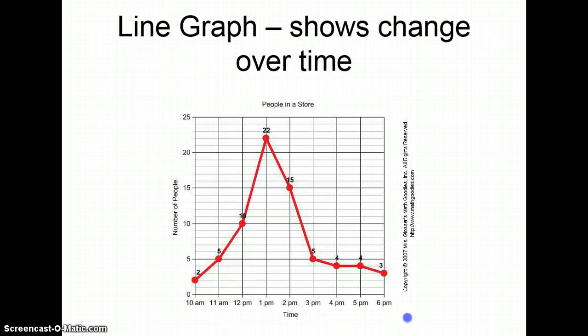A line graph shows change over time. And that time can be in hours, minutes, seconds, years, as long as time is going on, showing a change over time. It doesn't matter what units of time you're using.